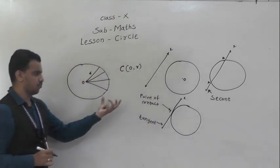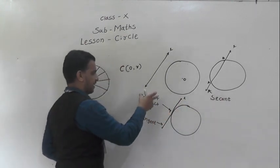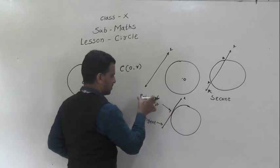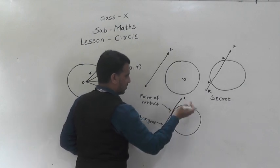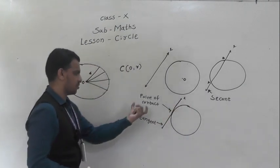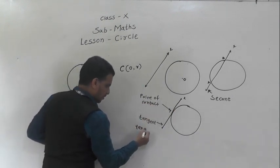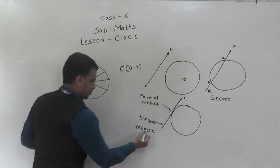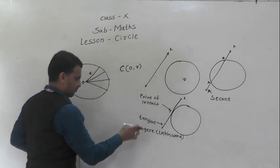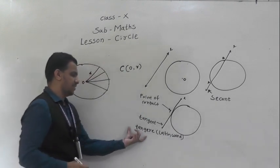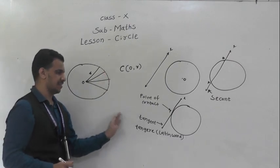So these three or four terms are basic terms: secant, tangent, and point of contact. The point of contact is the common point of tangent line L and the circle. The word 'tangent' comes from 'tangere', which is a Latin word.